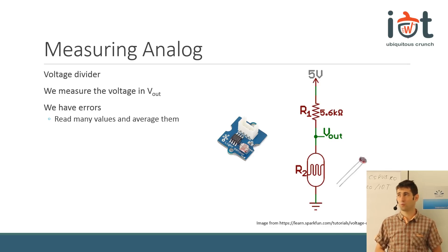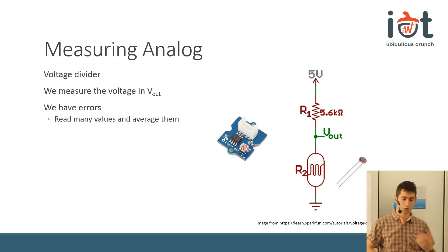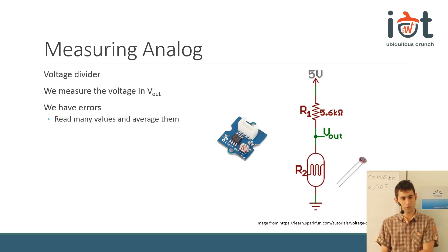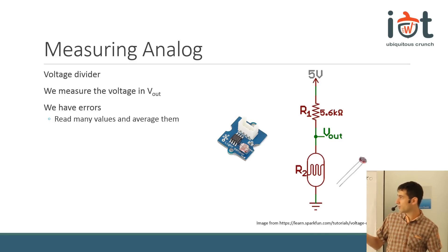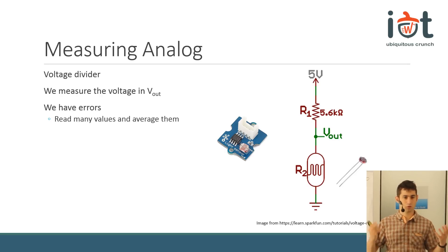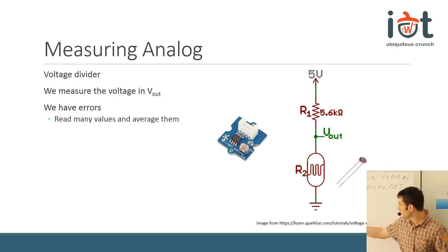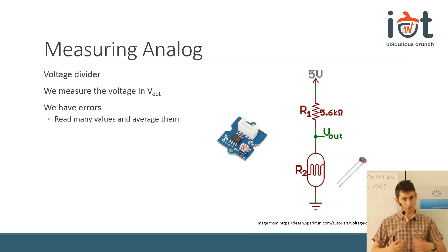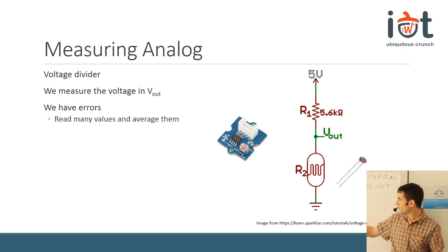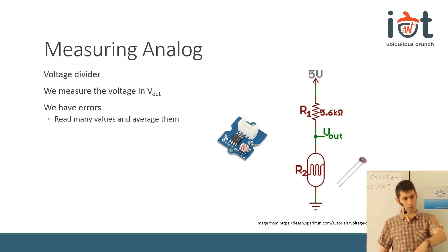If a sensor is damaged by reversed polarity, it won't burn visibly - it will send you bogus values afterward. Another thing to understand is that analog sensors measure with error. If it's only the photocell or thermistor, the error is large, because there's disturbance in the environment and in measuring the voltage. Sensors with an integrated voltage divider usually have some corrections embedded, but again, we measure with errors.